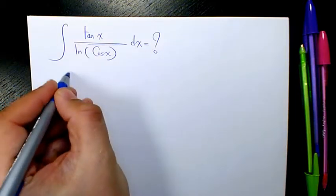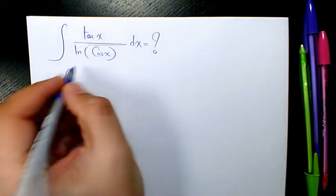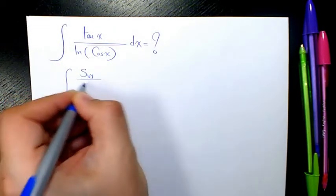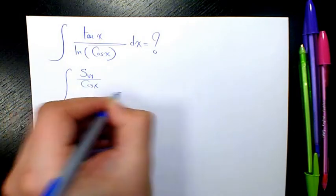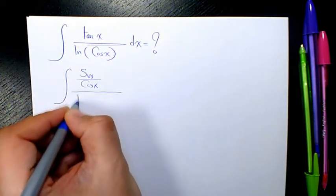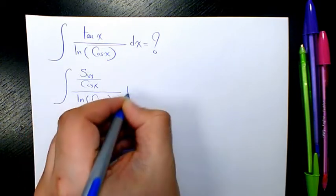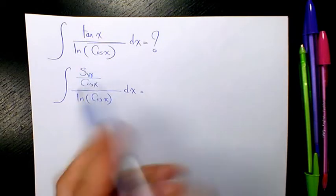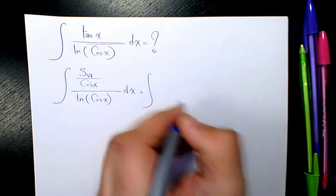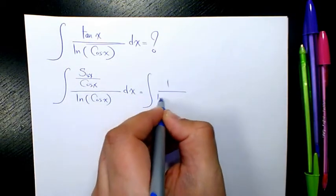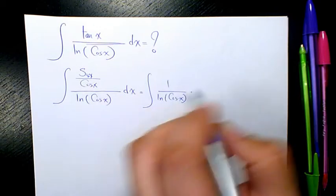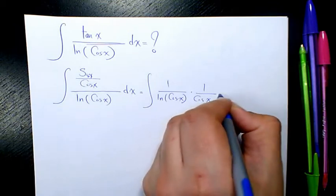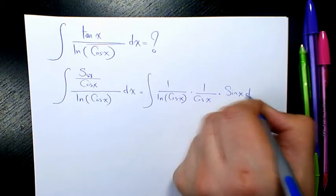First thing I want to do here is change tan(x) to sin(x) divided by cos(x), and here I have ln(cos(x)) dx. After that I'm gonna separate them, so that will be 1 over ln(cos(x)) times 1 over cos(x) times sin(x) dx.